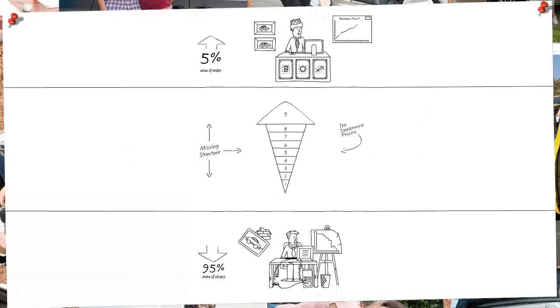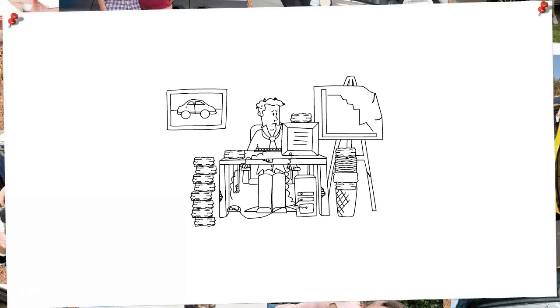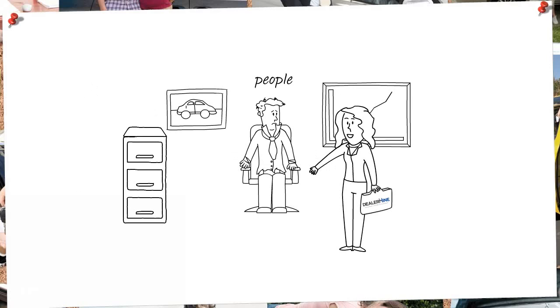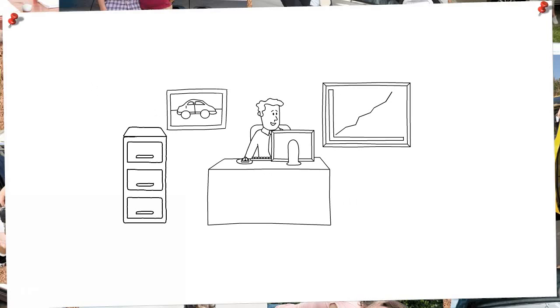Dealer Mine's proprietary 9-step process gives you the power to transform your dealership by helping you get organized, uncover issues, be proactive with your outreach, and get the most out of your people. Not another program you install and forget.